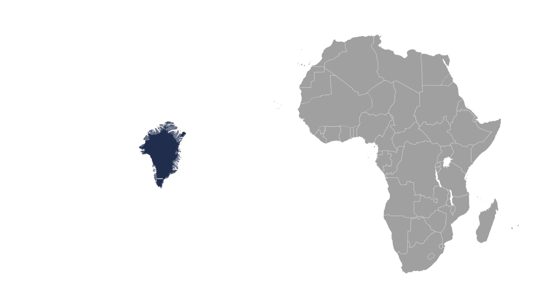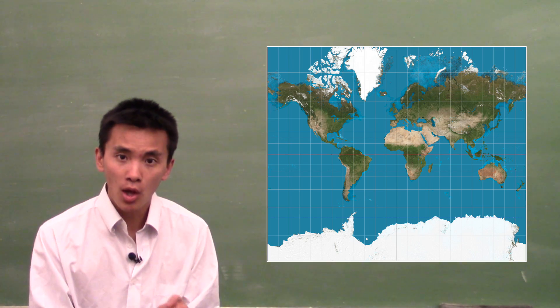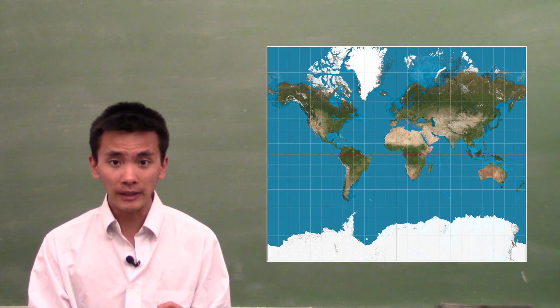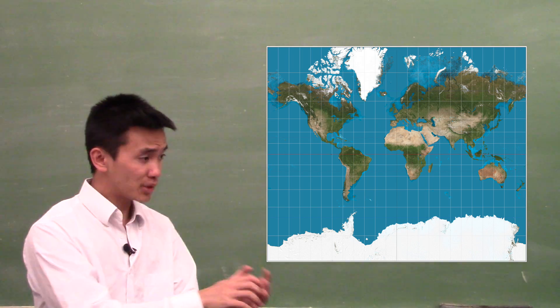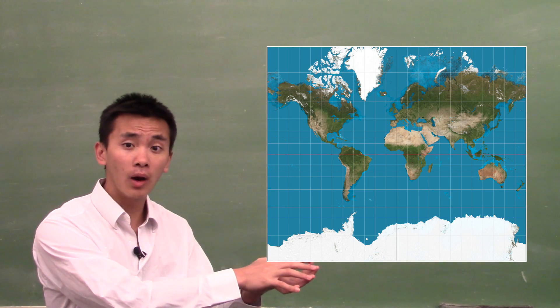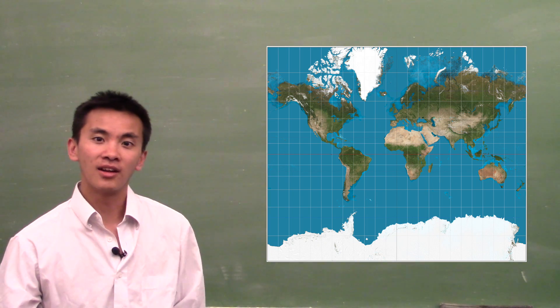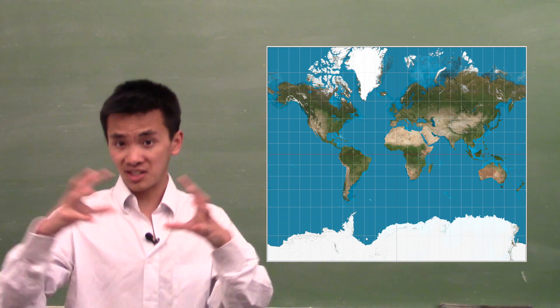Or rather, Africa is just that big. The US would fit not once, not twice, but three times within Africa. More generally, in this map that we're so used to, the distances are extremely misleading. Countries in the middle of the map, which are near the equator, are squeezed, while countries near the poles are stretched.